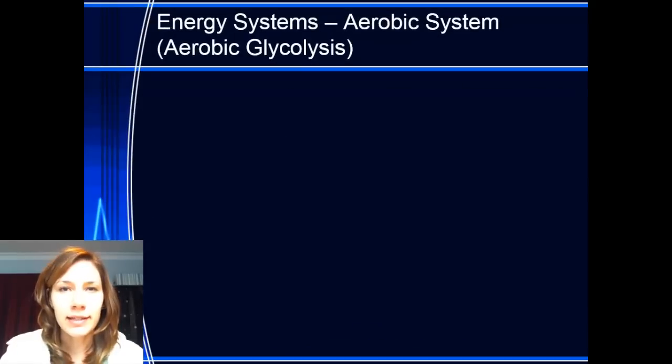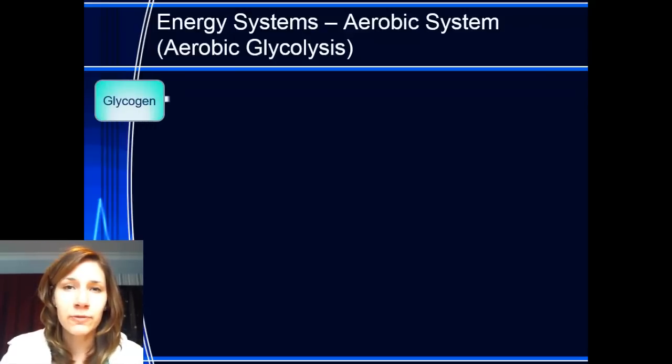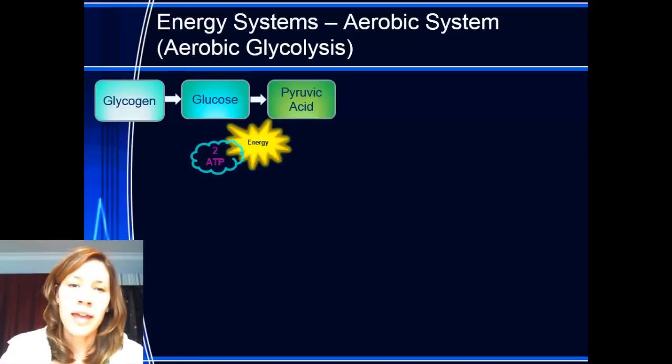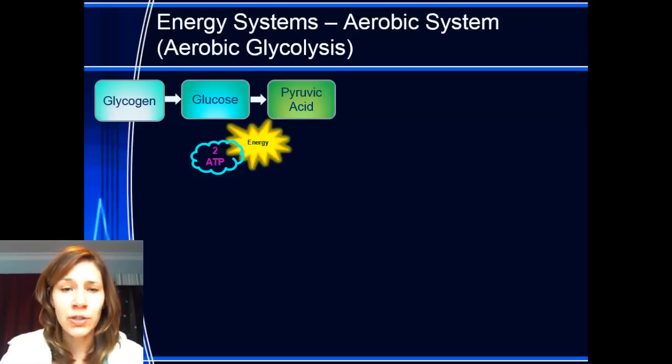The last energy system is the aerobic system. Now, this one is when there's oxygen present. So it looks very similar to anaerobic glycolysis. The word glycolysis means the breakdown of sugar, because glyco means sugar, lysis is basically process or breakdown. So we start off with glycogen again, the stored form in the muscles. It breaks down to glucose, because that's the form we need. And again, it converts into pyruvic acid. So these three steps are the same as anaerobic glycolysis, and also you end up with 2 ATP. But something different happens from this point on.